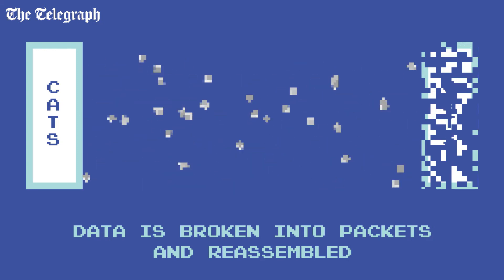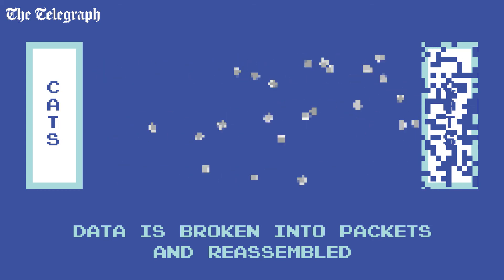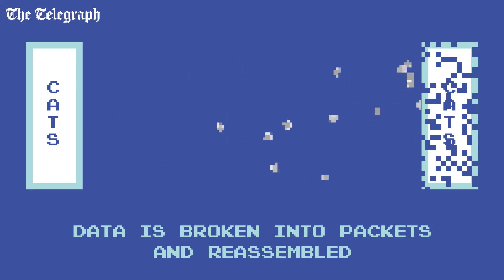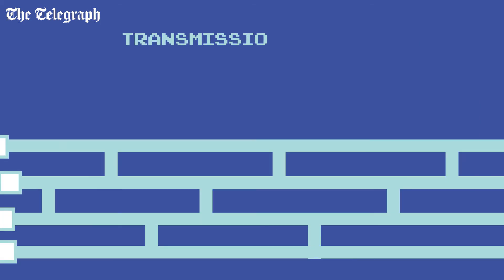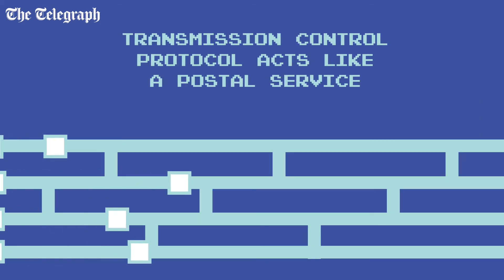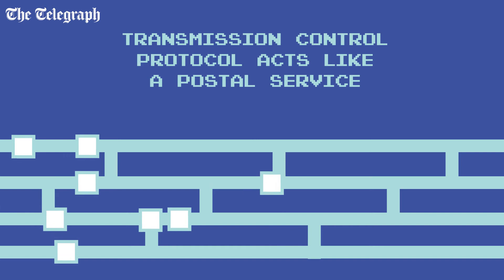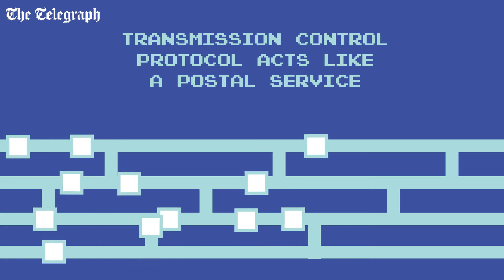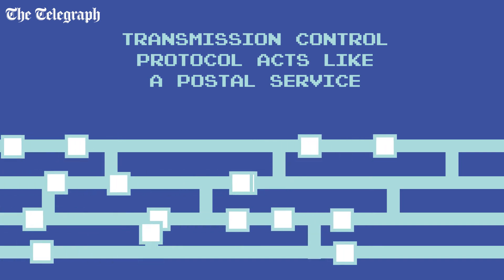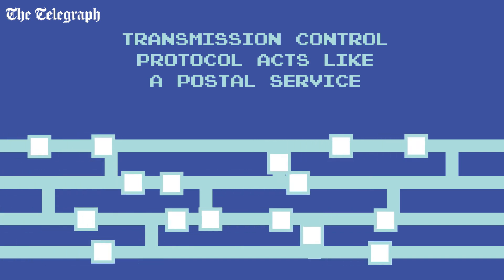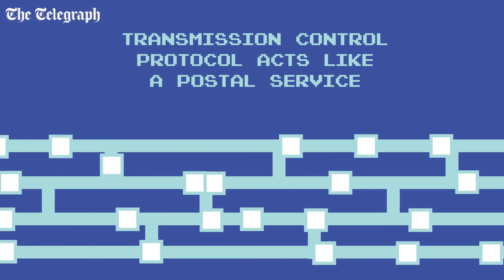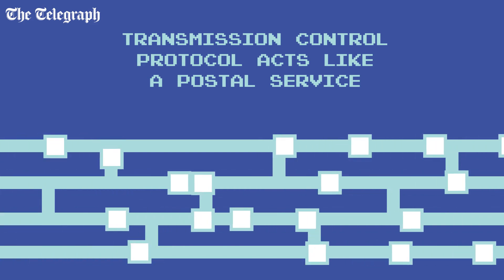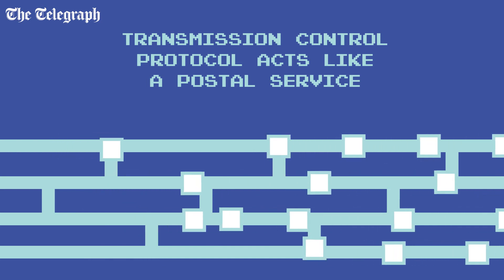These packets could all travel by different routes to reach the destination. When they arrive at the other end, they're reassembled back into the original data. This is all controlled by the Transmission Control Protocol, or TCP/IP, which acts like an internet postal service. The TCP/IP decides how to break up the data, which packets get sent where, and how to reassemble them.